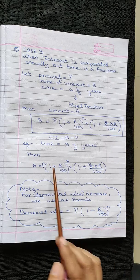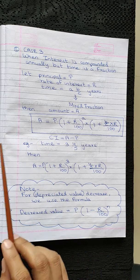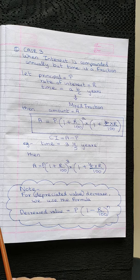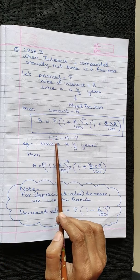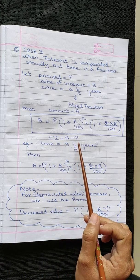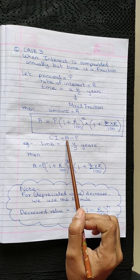And similarly, as the last case, compound interest will be obtained by subtracting principle from the amount.